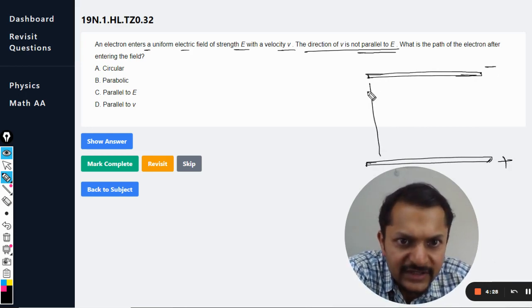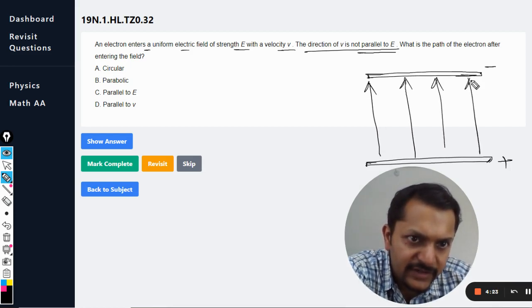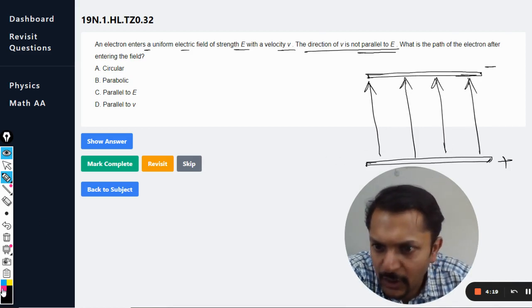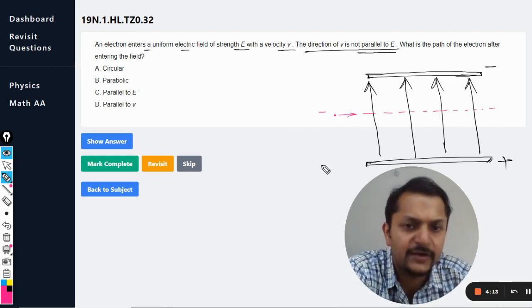So, electric field is like this. Now, the electron is entering into this field. When the electron enters this field, what do you think would be happening?